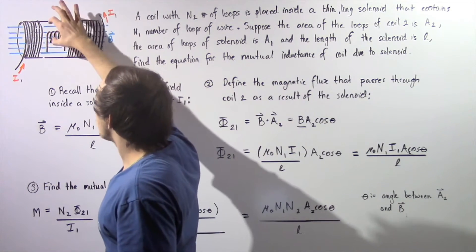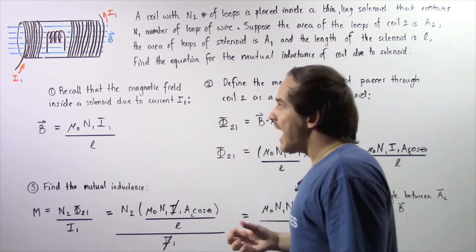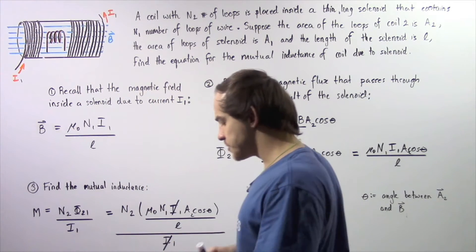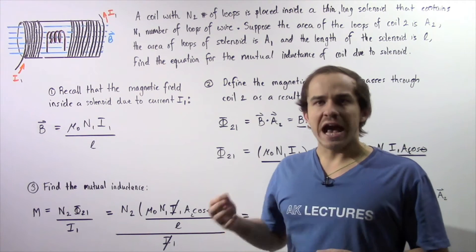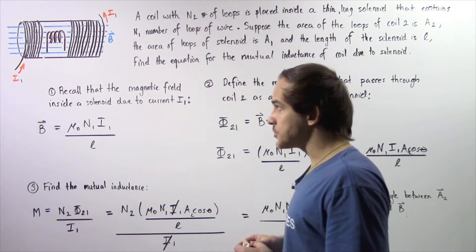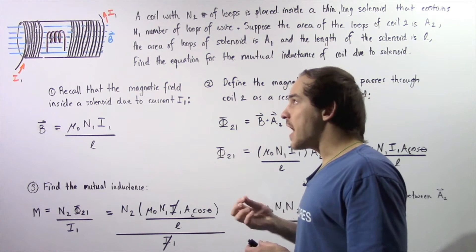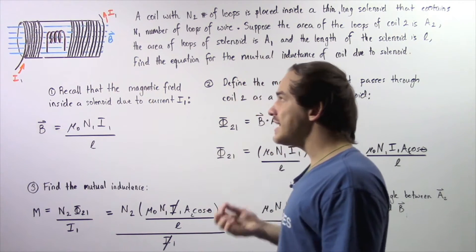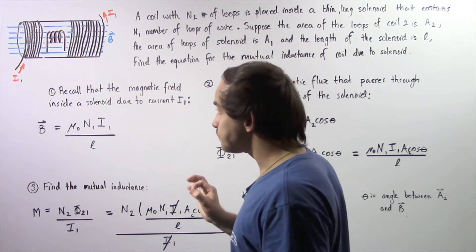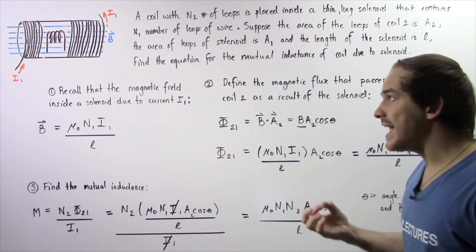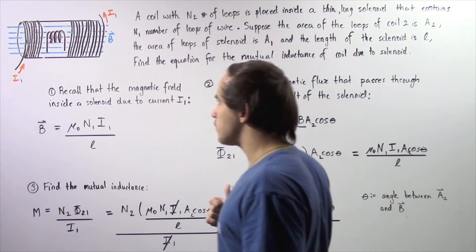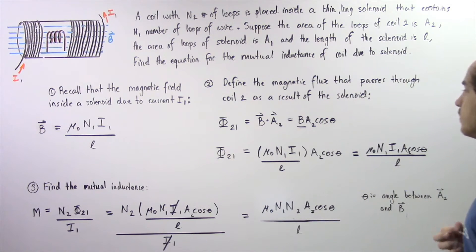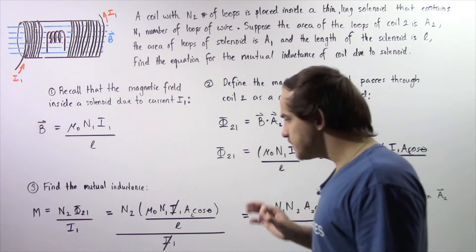Each loop of coil number 2 has an area given by A2, and a certain quantity of these magnetic field lines will travel through those loops. Because our magnetic field is changing, that will create a changing magnetic flux inside the loops of coil number 2. By Faraday's law, a changing magnetic flux in coil number 2 will create an EMF inside coil number 2, and that EMF will in turn create an induced electric current in coil number 2. This principle is known as mutual inductance, given by the symbol M.